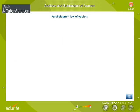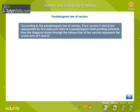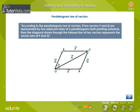Parallelogram law of vectors. According to the parallelogram law of vectors, if two vectors P and Q are represented by two adjacent sides of a parallelogram, both pointing outwards, then the diagonal drawn through the intersection of two vectors represents the vector sum of P and Q. Let two vectors P and Q be completely represented by the two sides OA and OB respectively of a parallelogram, and theta be the angle between the two given vectors P and Q. Then according to the parallelogram law of vectors, the diagonal OC of the parallelogram will give the resultant vector R such that vector R is equal to vector P plus vector Q.